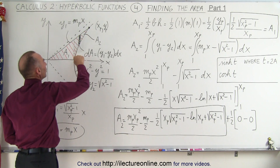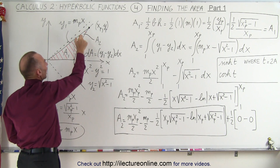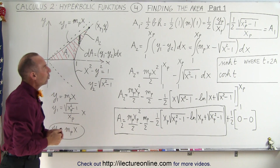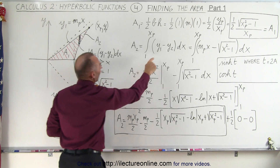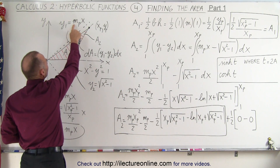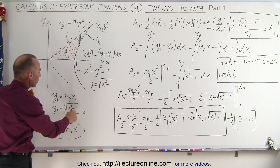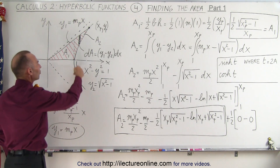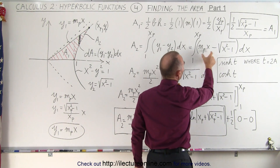To find area 2, we need to integrate because it's between two functions. We define a small area element dA equal to the height times the width, where the height is y1, the top curve, minus y2, the bottom curve, times dx. We integrate from 1 to x sub p, taking y1 minus y2 times dx. Here y1 is defined by the slope of the line times x, so m sub p times x, where m sub p equals the square root of x sub p squared minus 1 divided by x sub p. And y2 equals the square root of x squared minus 1.